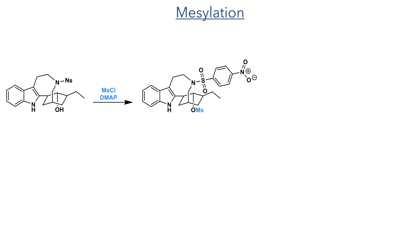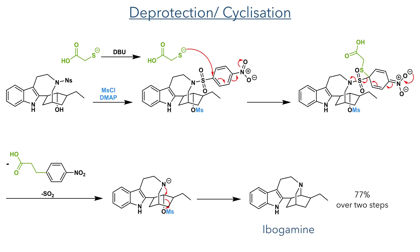To make this hydroxyl group into a good leaving group, it was mesylated using mesyl chloride and Et₃N, and then the nosyl group was deprotected using thioglycolic acid and DBU. The sulfur adds to the electron-deficient aromatic ring and the negatively charged intermediate decomposes to restore aromaticity with elimination of SO₂ and the negatively charged nitrogen species. This then undergoes an intramolecular SN2 addition, displacing the mesyl group and forming ibogamine in a 77% yield over two steps.